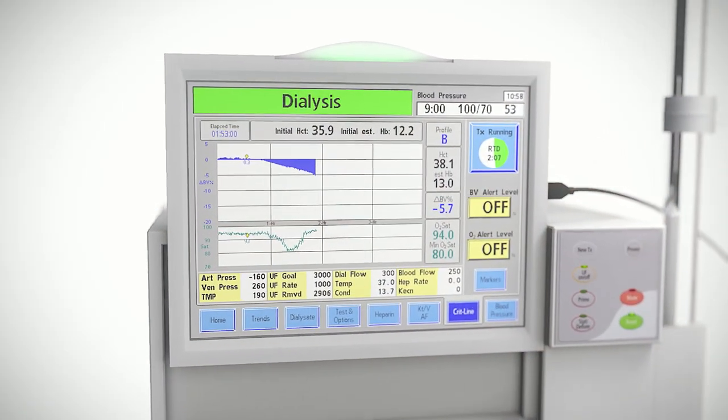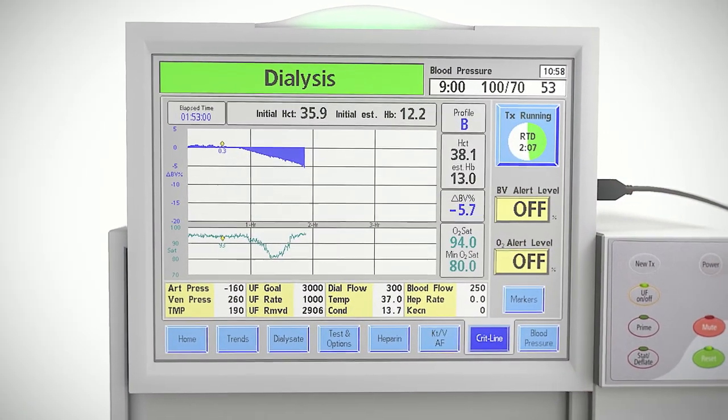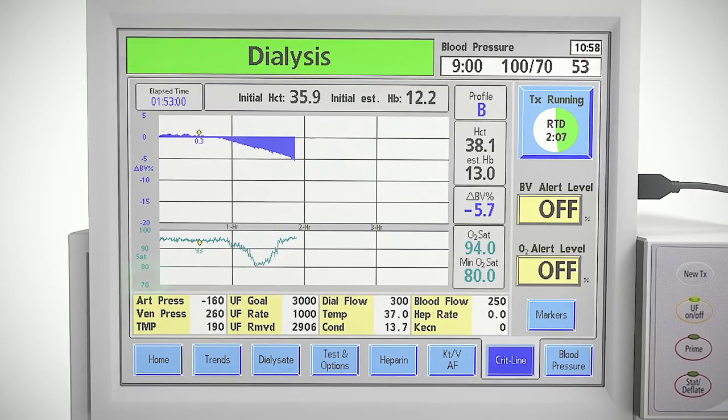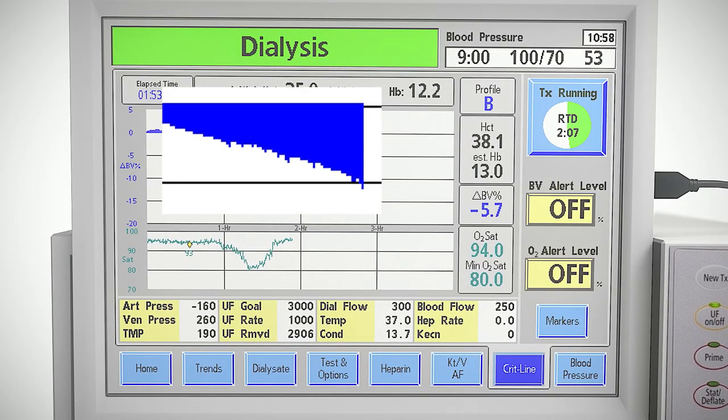Profile B is represented as a gradual slope and has been targeted to find the best compromise between a high ultrafiltration rate and the prevention of intradialytic symptoms.